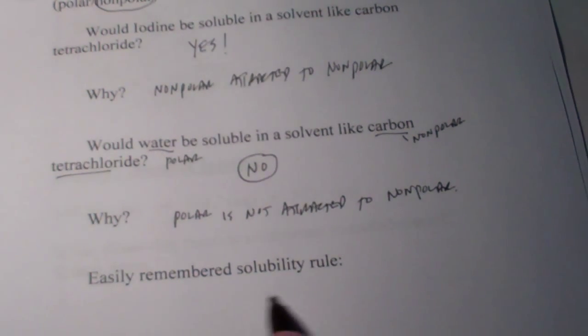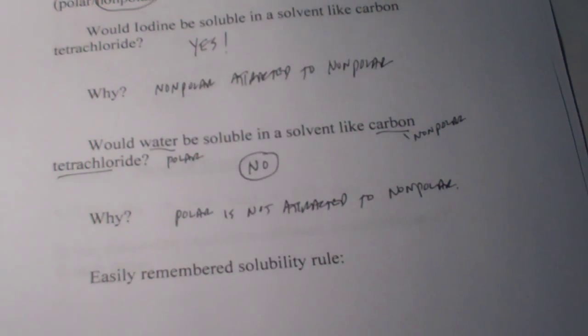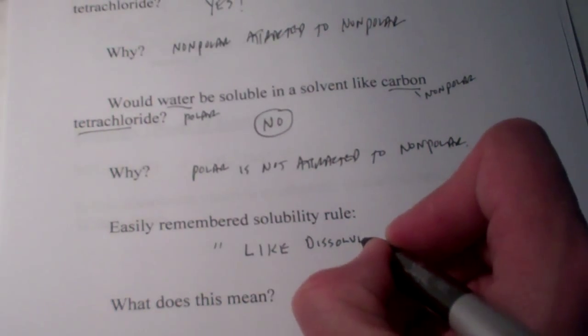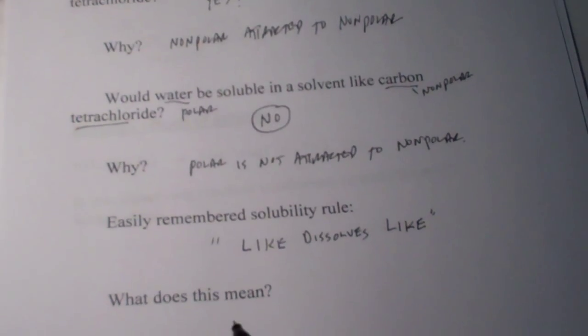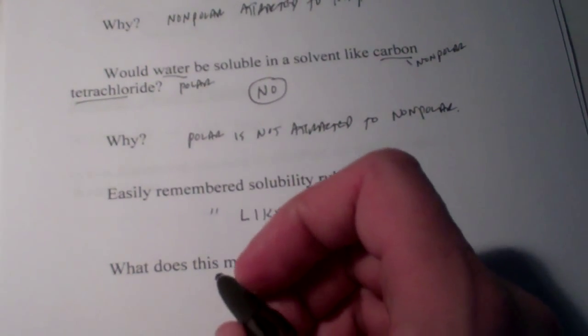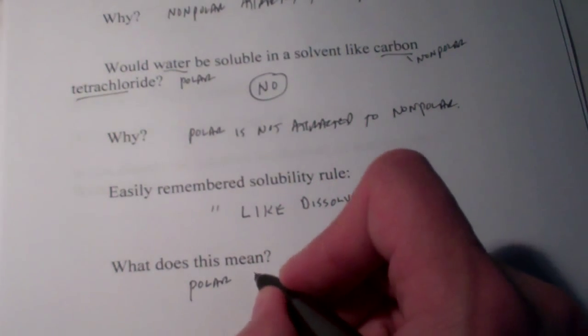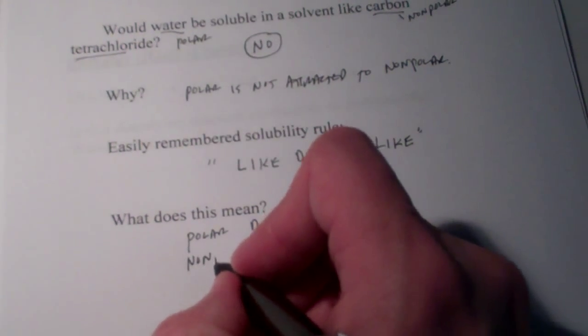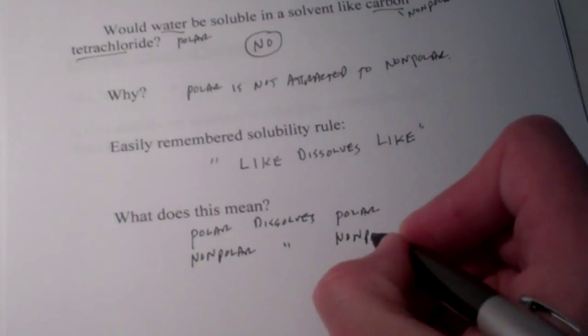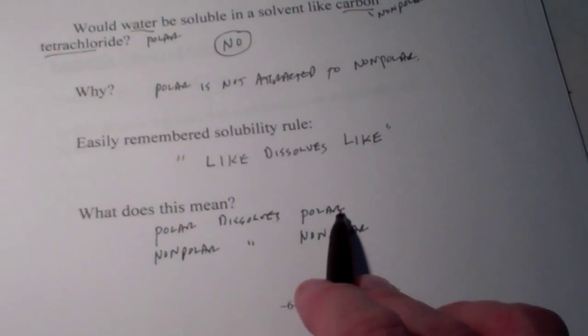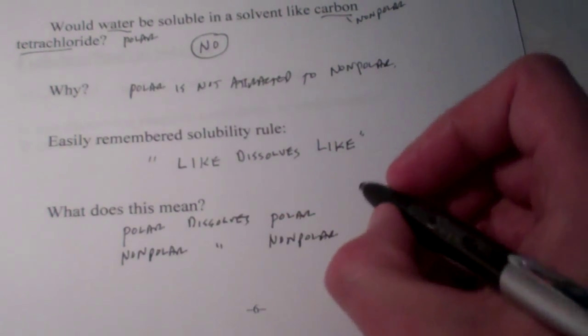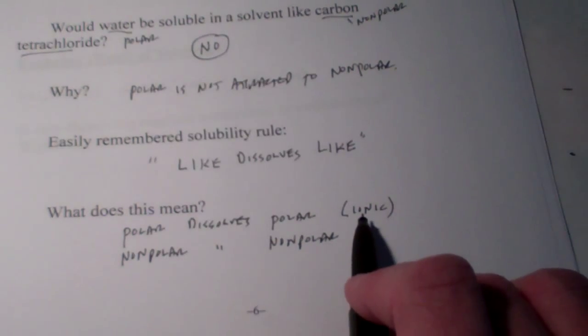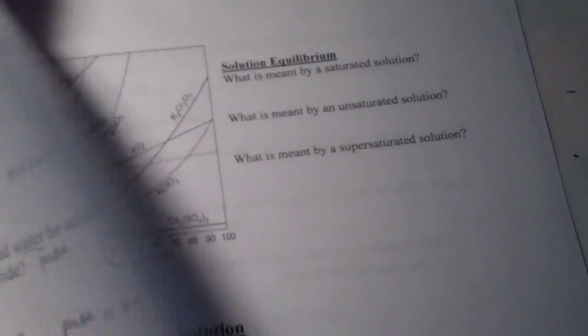So we come up with this nice, easily remembered solubility rule. It's all of three words long. You ready for it? Like dissolves like. What does that mean? Can you come up with an answer? Polar dissolves polar and nonpolar dissolves nonpolar. We can add a little bit to this polar dissolves polar part of the definition. Doesn't polar also dissolve ionic? We're going to learn later that it does not dissolve all ionic compounds very well, so we're going to learn some exceptions later on in this chapter.